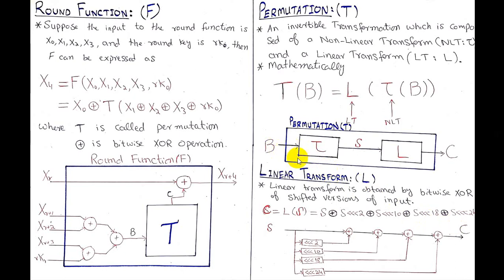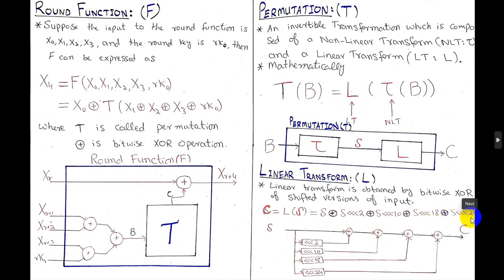So given B as input, we pass it to the non-linear transformation first to get S, then pass S to the linear transformation to get C. The linear transformation L of S is computed by XORing five variants of S: S itself, S rotated left by 2 bits, S rotated left by 10 bits, S rotated left by 18 bits, and S rotated left by 24 bits. All five variants are XORed together to produce C.